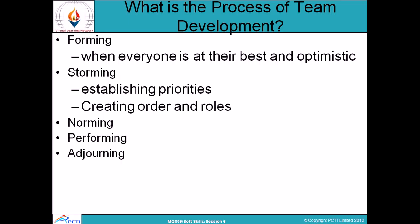Next is the norming stage. As the name suggests, we make norms here — that means rules and regulations. We will follow our regulations in this stage and work out where roles will be assigned and how to follow rules accordingly. Next is the performing stage, which is very important. Because once we have worked through the three stages — forming, storming and norming — then we start the performing stage. The order, roles, and rules have been set, and performance will start accordingly.